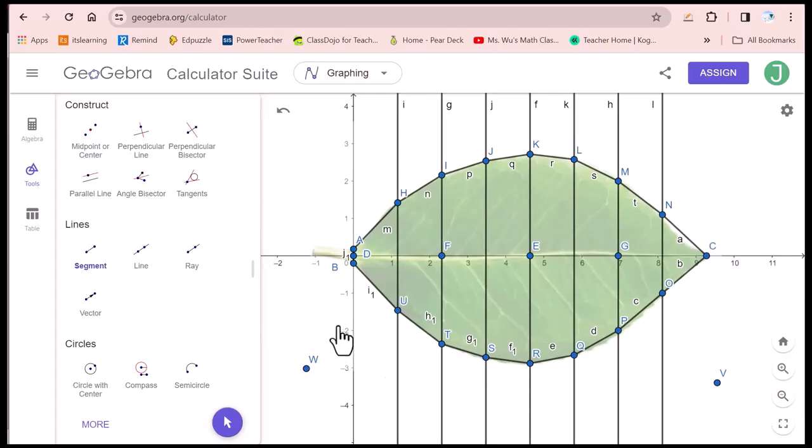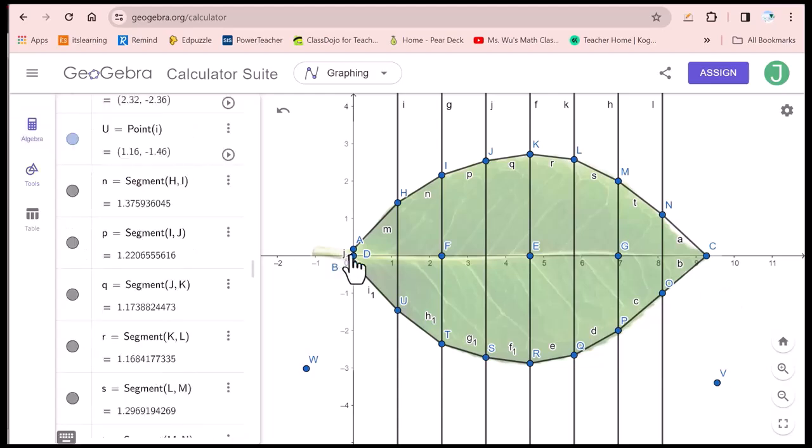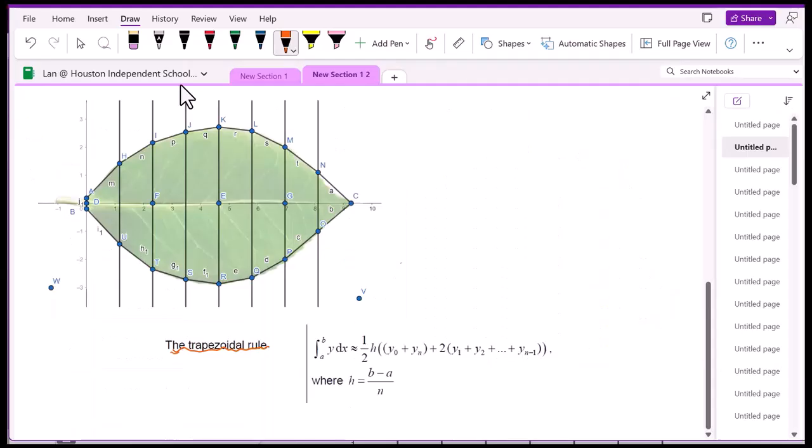Before zoom in or out, make sure you fix the object so that your image doesn't change its position. Record the coordinates of the points on the upper curve and lower curve of this leaf. So that I can work on the area of this leaf. We will use the trapezoidal rule to estimate the area of this leaf.